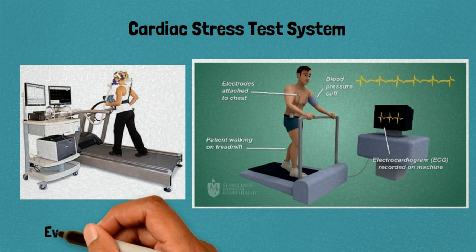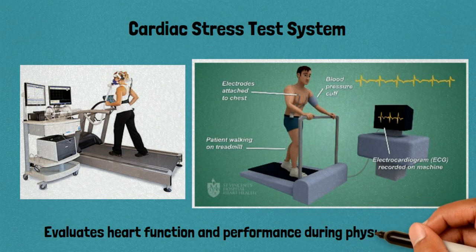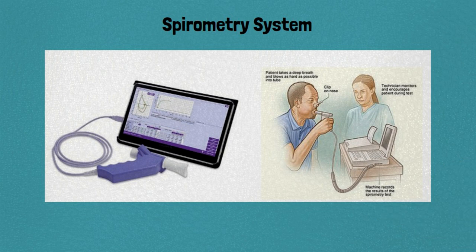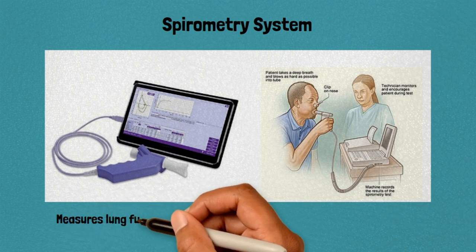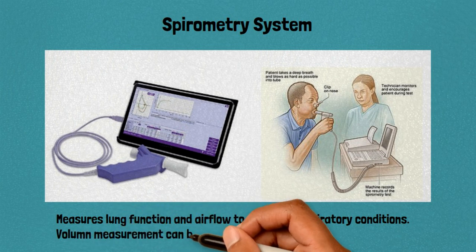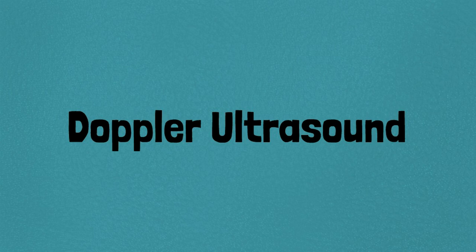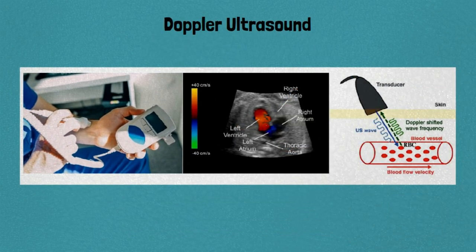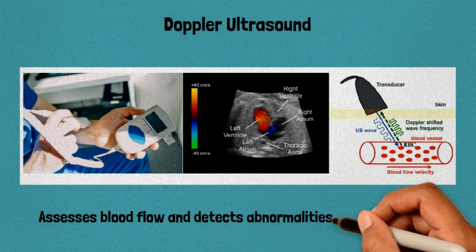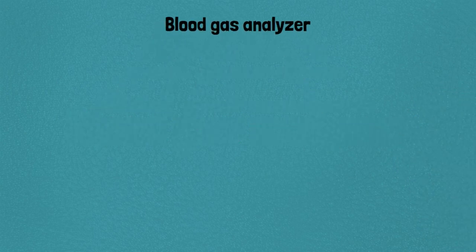24. Cardiac stress test system: evaluates heart function and performance during physical stress. 25. Spirometry system: measures lung function and airflow to diagnose respiratory conditions. 26. Doppler ultrasound: assesses blood flow and detects abnormalities in blood vessels.